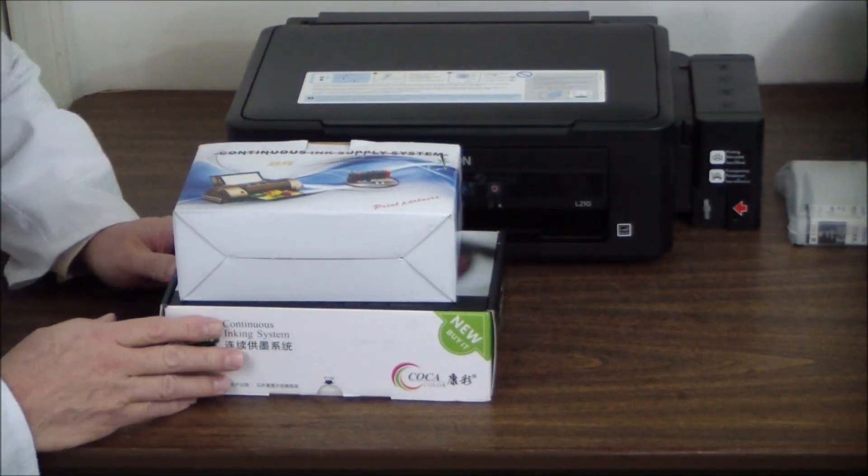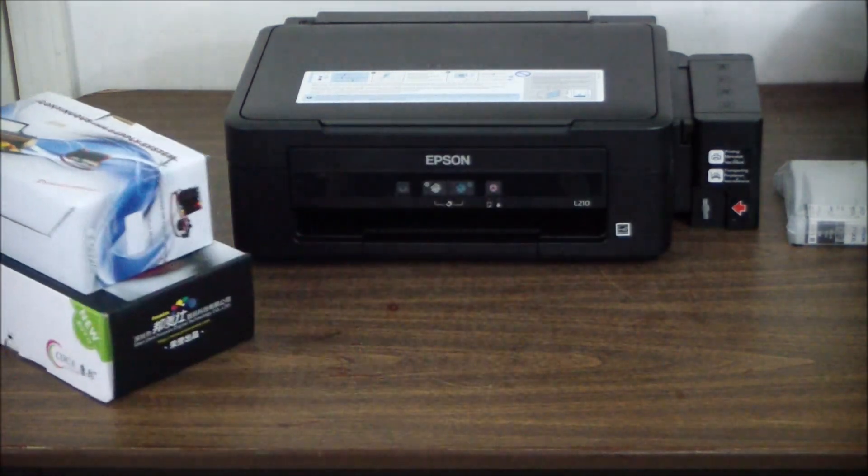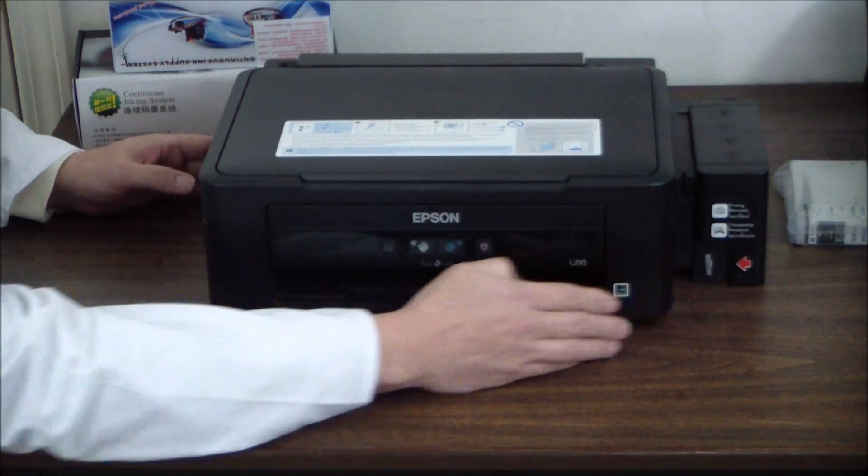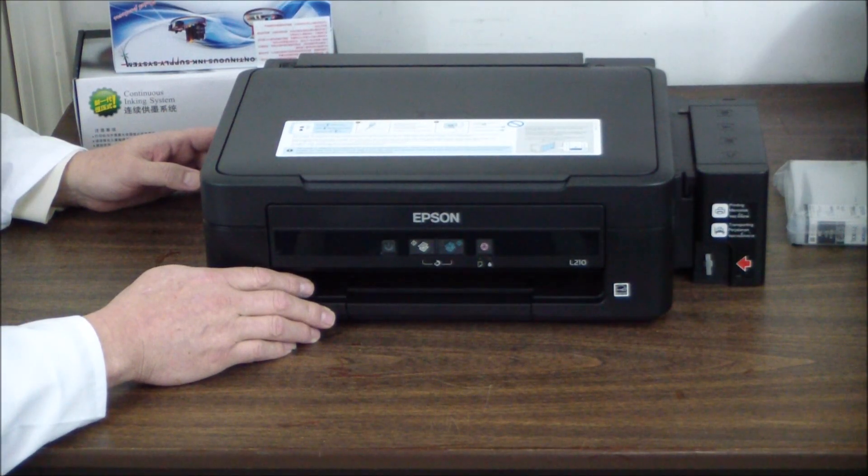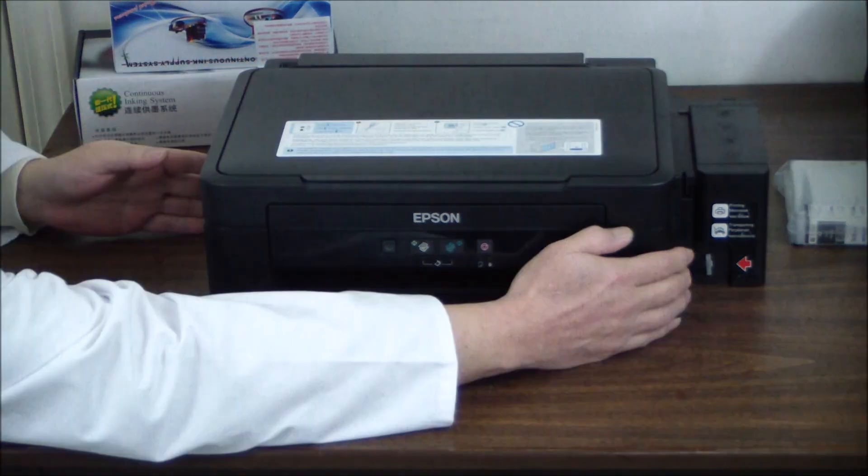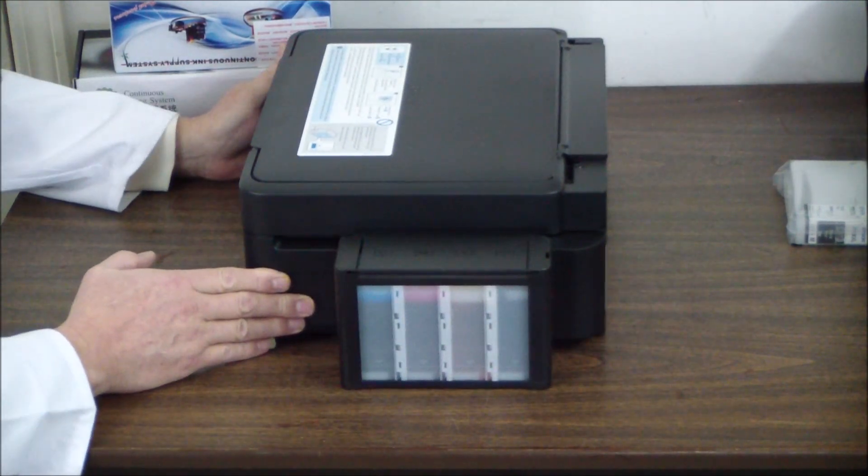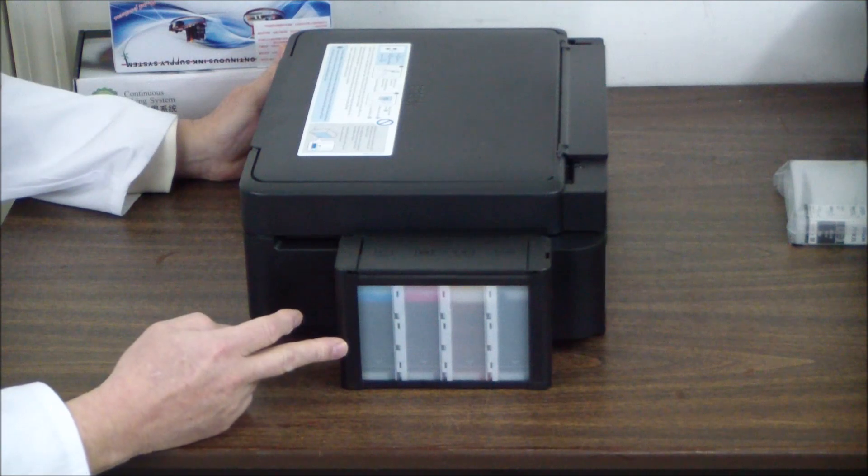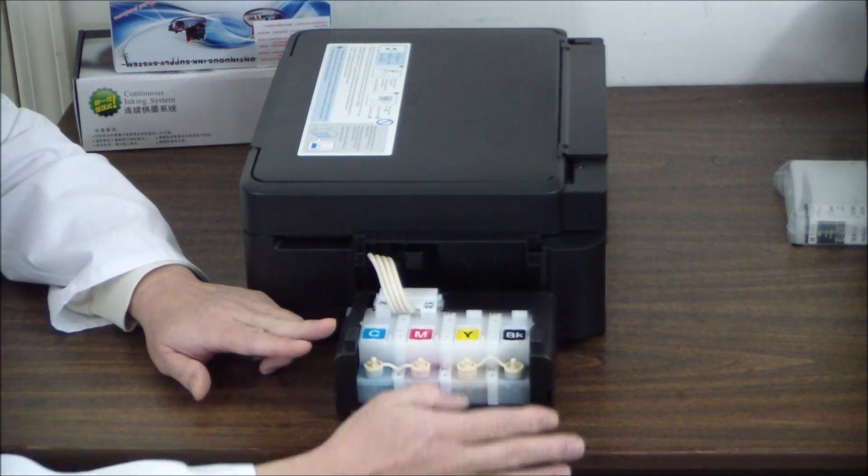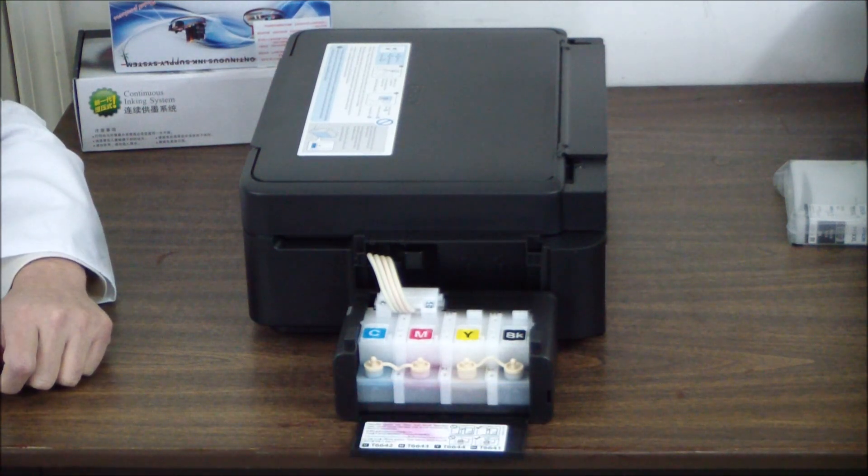Now, these are kits and you install them yourselves. But you can also get printers from Epson that already have a built-in CISS system. This is the Epson L210 MFP, and if I spin it around here, you can see that it's got external ink tanks on the side. And you can detach this and fill up the reservoirs with bottled ink.